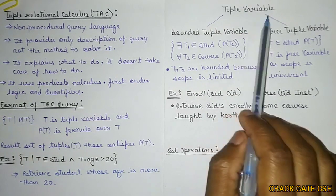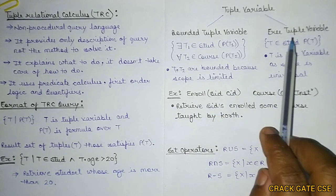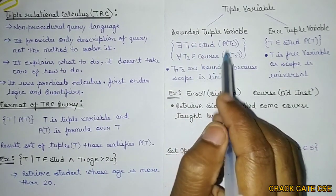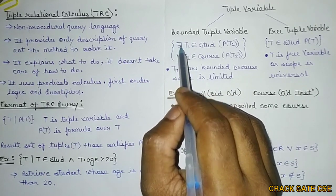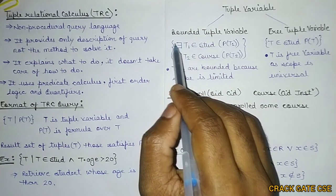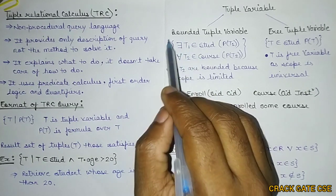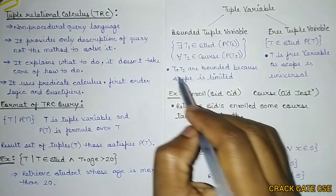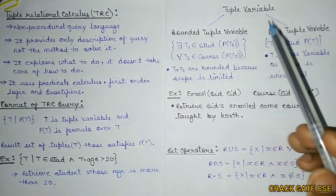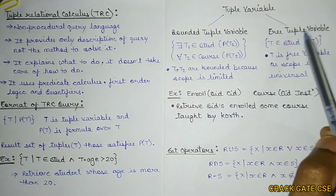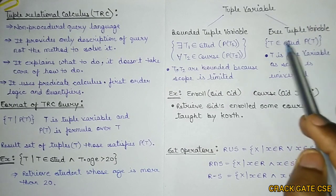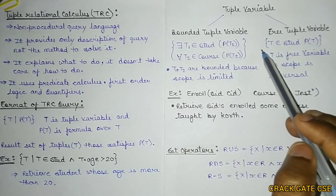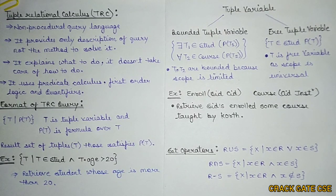Now there is one important thing about T. As I told you, T is a tuple variable. Tuple variables are of two types: one is bounded tuple variable and another one is free tuple variable. The bounded tuple variable has a limited scope — we are using quantifiers like 'there exists' and 'for all' with the tuples. If we are using these quantifiers with the tuples, then it is known as a bounded tuple variable, because the scope has been limited to that quantifier. On the other hand, a free tuple variable is a variable which does not have any limited scope — the scope is universal. So T is a free variable as the scope is universal; there is no quantifier with this T.